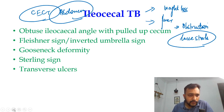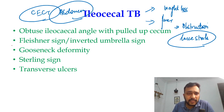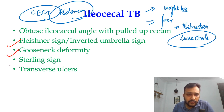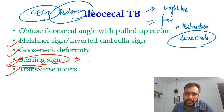Talking about barium findings, there are very few signs which are seen in patients with ileocecal tuberculosis: one is Fleschner sign, gooseneck deformity, Sterling sign, and transverse ulcers.